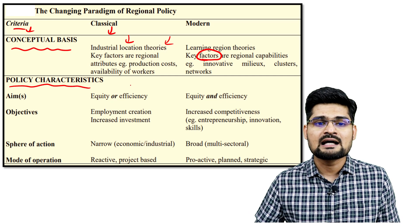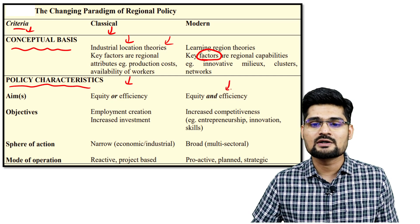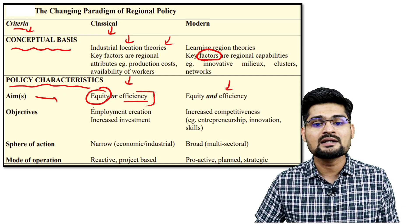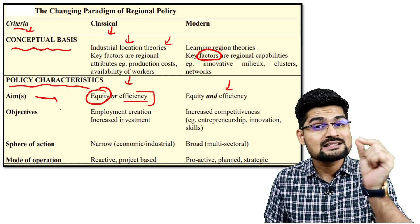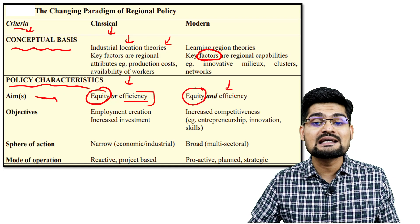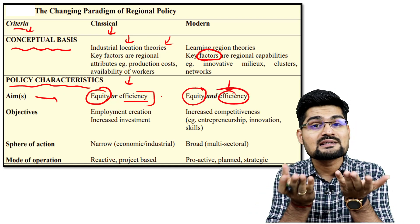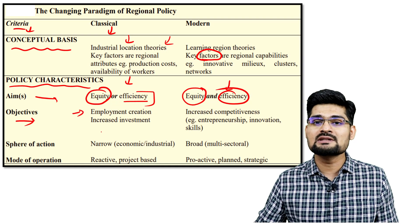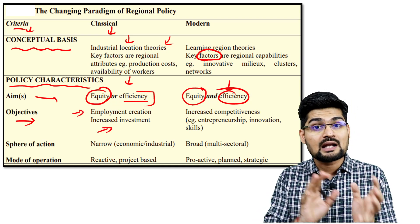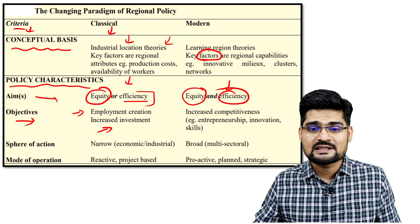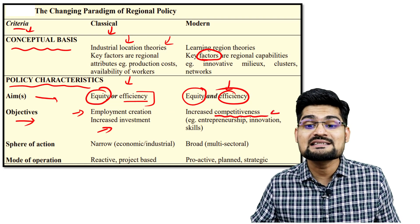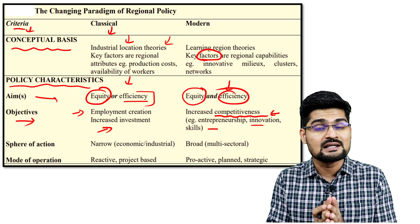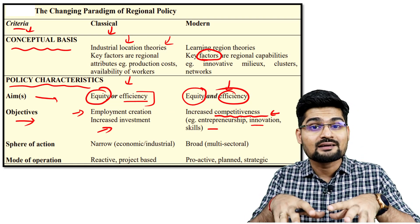Looking at how policy characteristics changed from the classical to the modern period: the aim used to be equity or efficiency, but now the aim is integrative — equity and efficiency at the same time. Earlier objectives were employment creation and increased investment, but now objectives are increased competitiveness in the market, entrepreneurship, innovation, and skill-driven jobs.